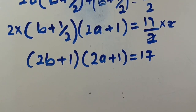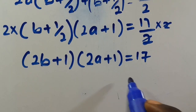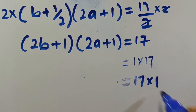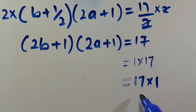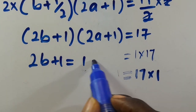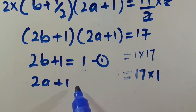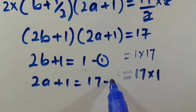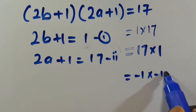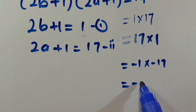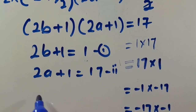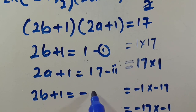We can express 17 as a product of two numbers: 1 times 17 or 17 times 1. So either 2b plus 1 equals 1 (equation 1) and 2a plus 1 equals 17 (equation 2). We can also use negative factors: minus 1 times minus 17 and minus 17 times minus 1. This gives 2b plus 1 equals minus 1 as equation 4.